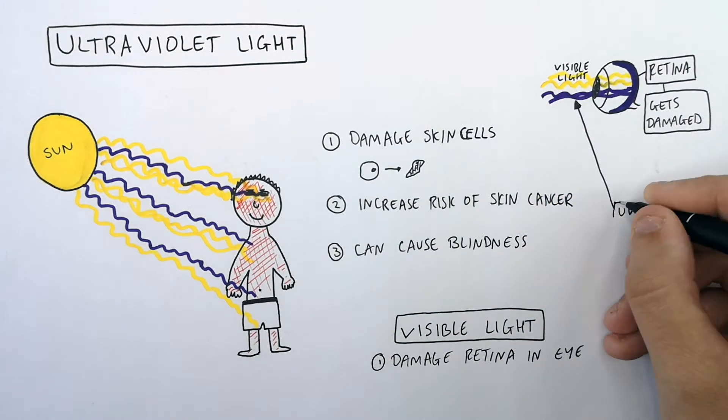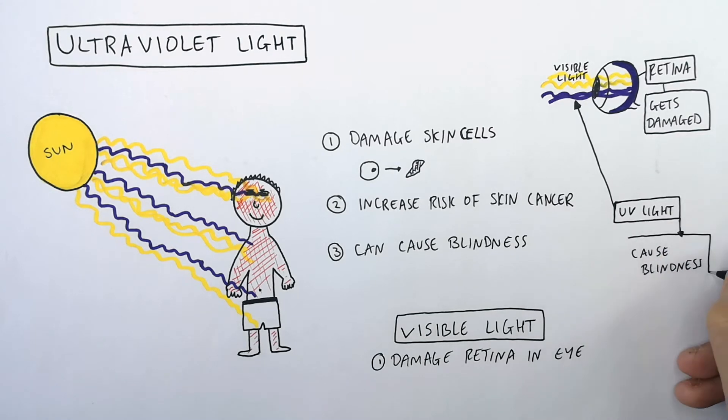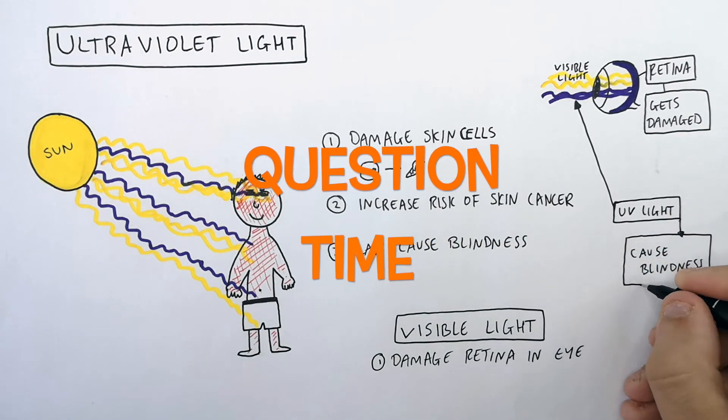Whereas UV light can cause blindness. It's question time. Attempt these questions to check your understanding.